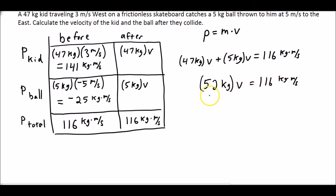We need to solve for V now, so we're going to take both sides and divide it by 52 kilograms. That will cancel those out, kilograms over here cancels out, and so velocity is equal to 116 divided by 52, 2.2, and we're left with meters per second.